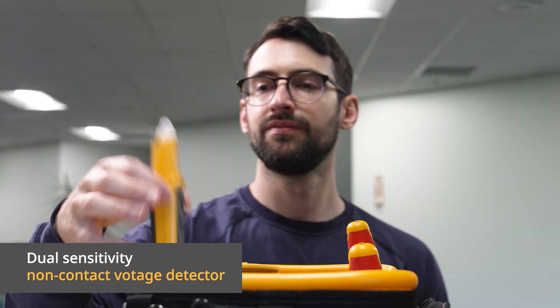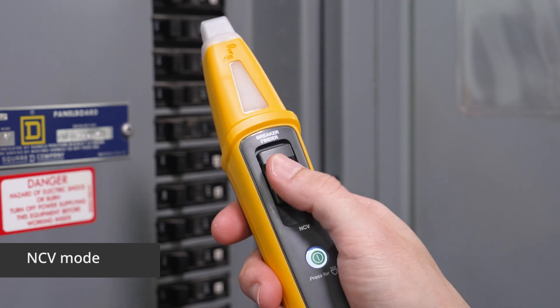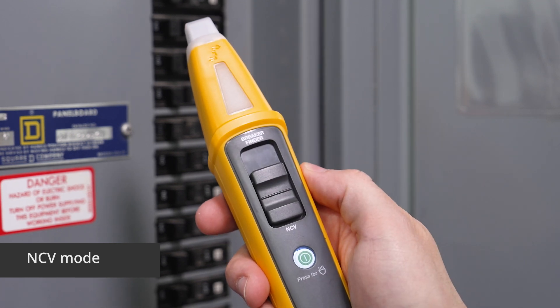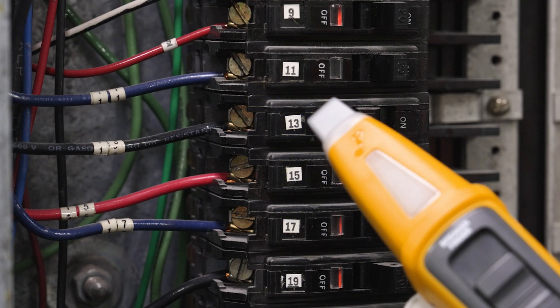The BK120 also works as a voltage detector. Turn it to NCV mode for non-contact AC voltage detection. Just put the tip near your AC voltage source.